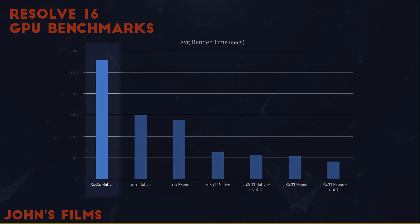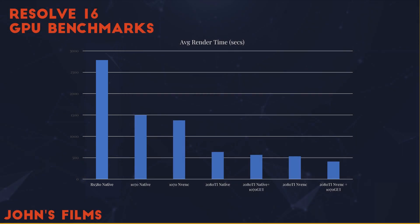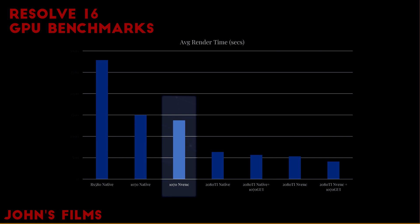Looking at our benchmark, starting with the RX 580 running by itself: that render took 2,787 seconds. The 1070 flexes its muscles and shows it only takes about 1,500 seconds. When using the NVENC NVIDIA hardware encoder on the 1070, it takes 1,375 seconds.